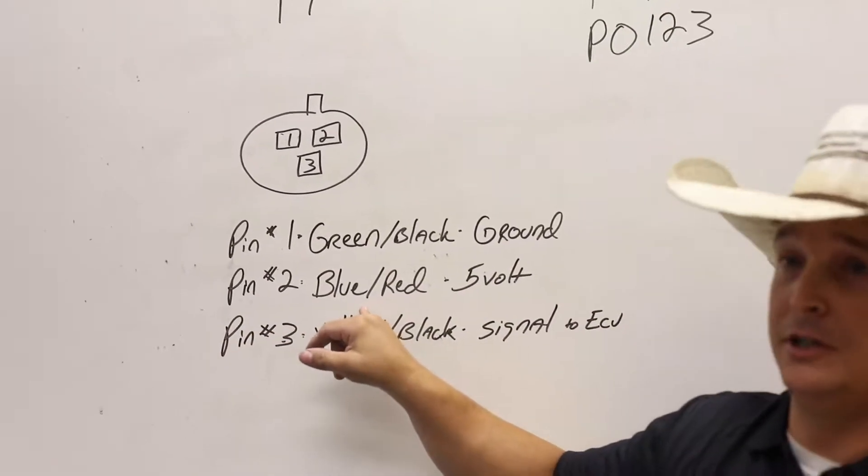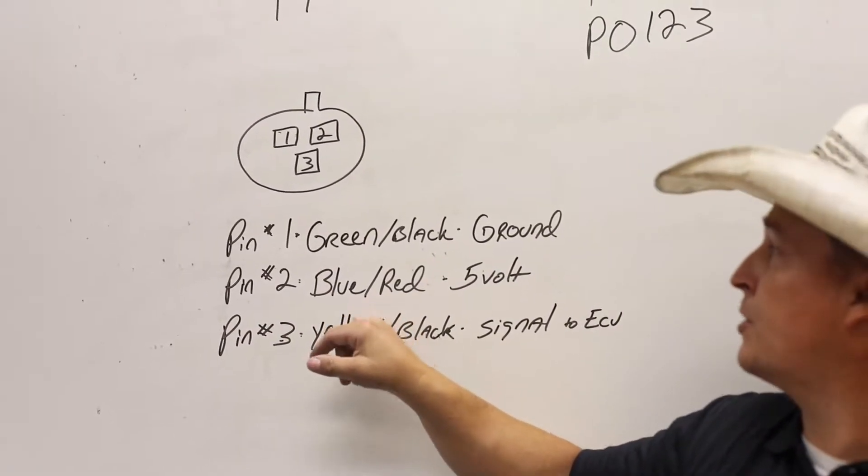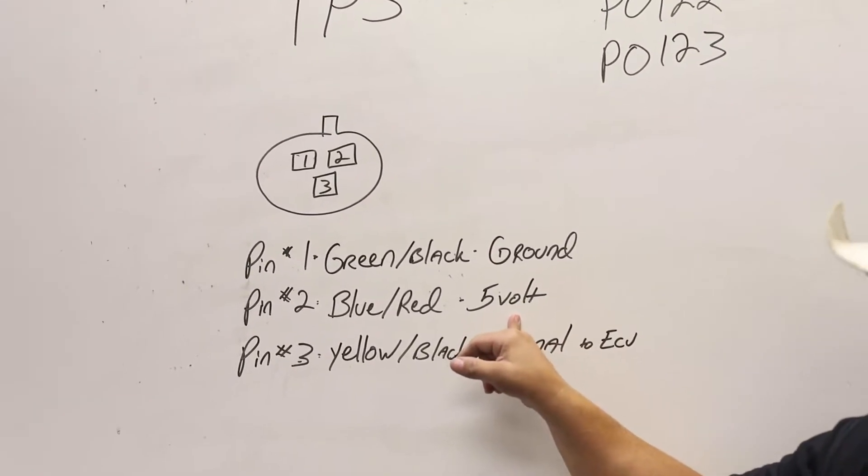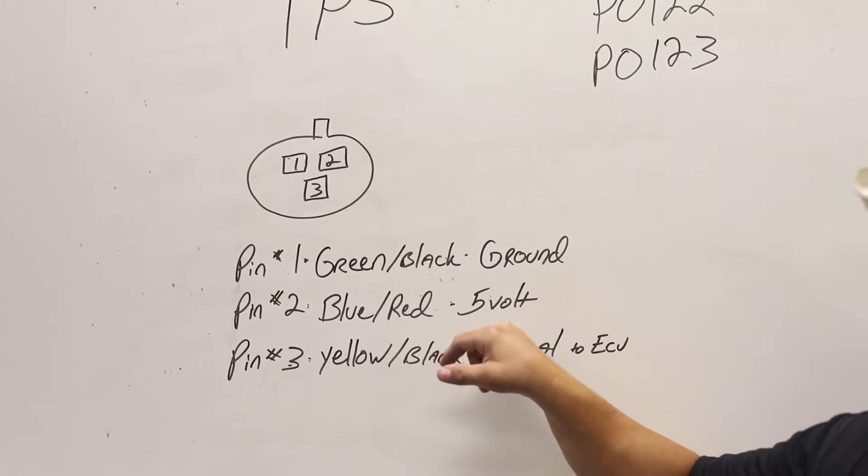Your pin number two is going to be a blue wire with a red stripe. That is your five volts from your ECU. Once again, it requires this five volts.